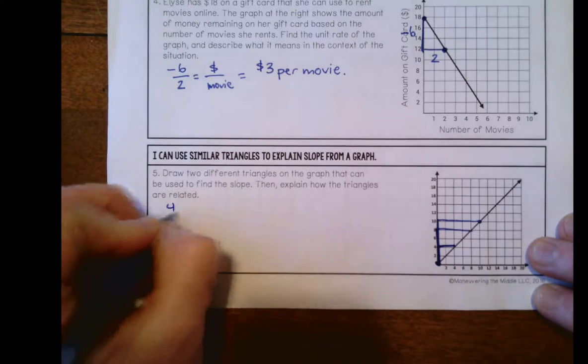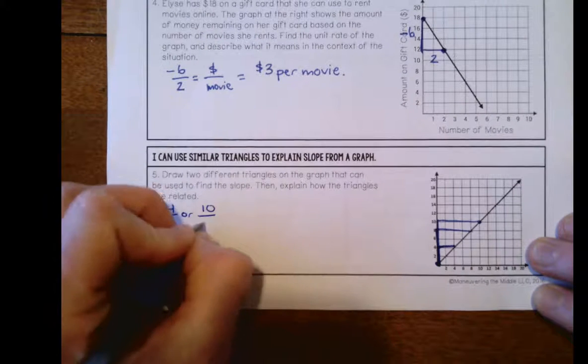So let's just pick up 4 over 4, or up 10 over 10.